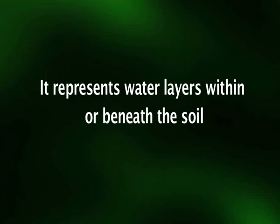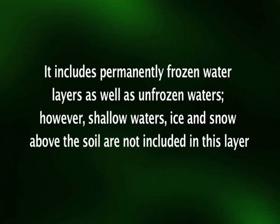The W horizon represents water layers within or beneath the soil. It includes permanently frozen water layers as well as unfrozen waters; however, shallow waters, ice, and snow above the soil are not included in this layer.